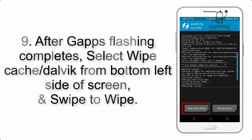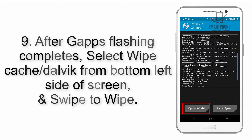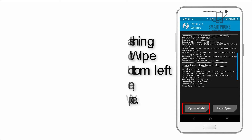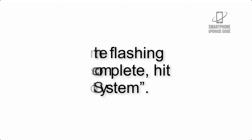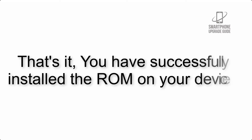Step 9: After GApps flashing completes, select Wipe Cache and Dalvik from the bottom left side of the screen and swipe to wipe. Step 10: When the flashing process is complete, hit Reboot System. That's it — you have successfully installed the ROM on your device.